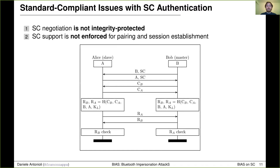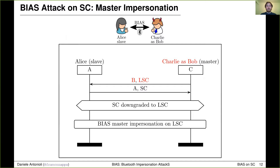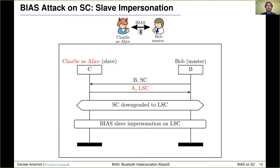We take advantage of both vulnerabilities to design master and slave impersonation attacks on SC authentication. The master impersonation attack on SC works as follows: Charlie presents to Alice as Bob by sending Bob's Bluetooth address and lies about his capabilities by proposing LSC instead of SC. Even if Alice supports SC, the secure session is downgraded from SC to LSC, meaning the authentication procedure is downgraded from mutual to unilateral. Then Charlie performs the master impersonation attack on LSC. The slave impersonation attack exploits the same downgrade trick: Charlie presents to Bob as Alice, proposes LSC rather than SC, downgrades SC to LSC, and then performs the slave impersonation attack on LSC taking advantage of the role switch trick.